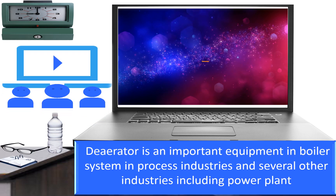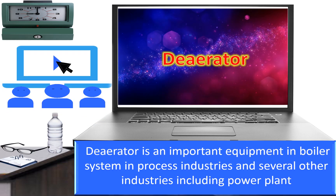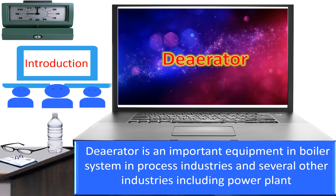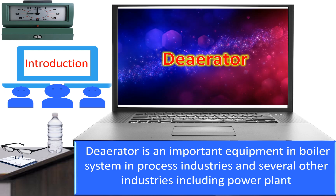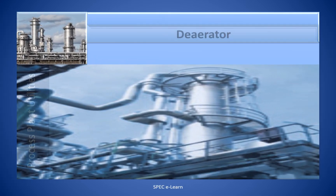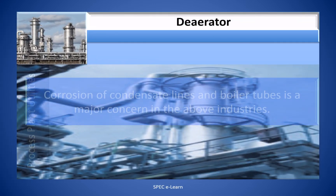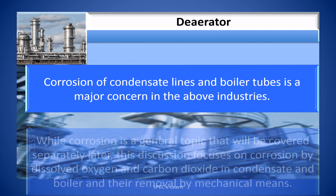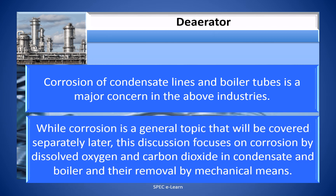De-aeration is an important equipment in boiler systems in process industries and several other industries including power plants. Corrosion of condensate and boiler tubes is a major concern in these industries. While corrosion is a general topic that will be covered separately, this discussion focuses on corrosion by dissolved oxygen and carbon dioxide in condensate and boiler systems, and the removal by mechanical means.